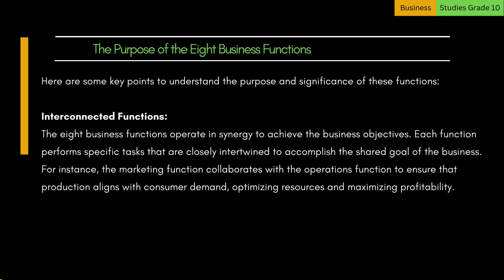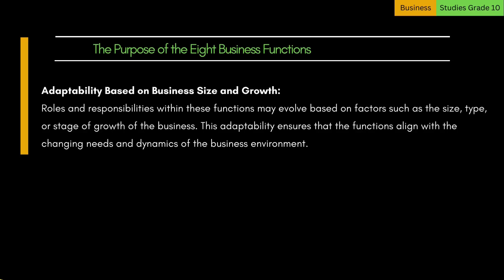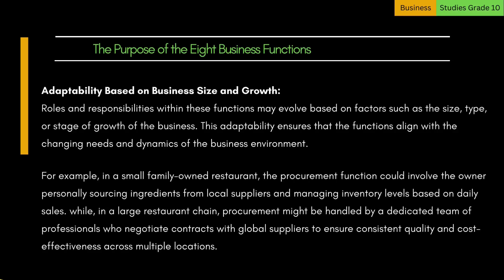For instance, the marketing function collaborates with the operations function to ensure that production aligns with consumer demand, optimizing resources and maximizing profitability. Roles and responsibilities within these functions may evolve based on factors such as the size, type, or stage of growth of the business. For example, in a small family-owned restaurant, the procurement function could involve the owner personally sourcing ingredients from local suppliers, while in a large restaurant chain, procurement might be handled by a dedicated team negotiating contracts with global suppliers to ensure consistent quality and cost-effectiveness across multiple locations.